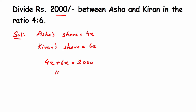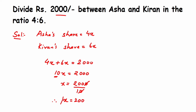So this is equal to 2000. I have to find the value of x. So 4x plus 6x is 10x, meaning 10x equals 2000. To find x, transpose the 10 to the other side — since 10 is in multiplication, it comes to division. Canceling the zeros, we get x is equal to 200.